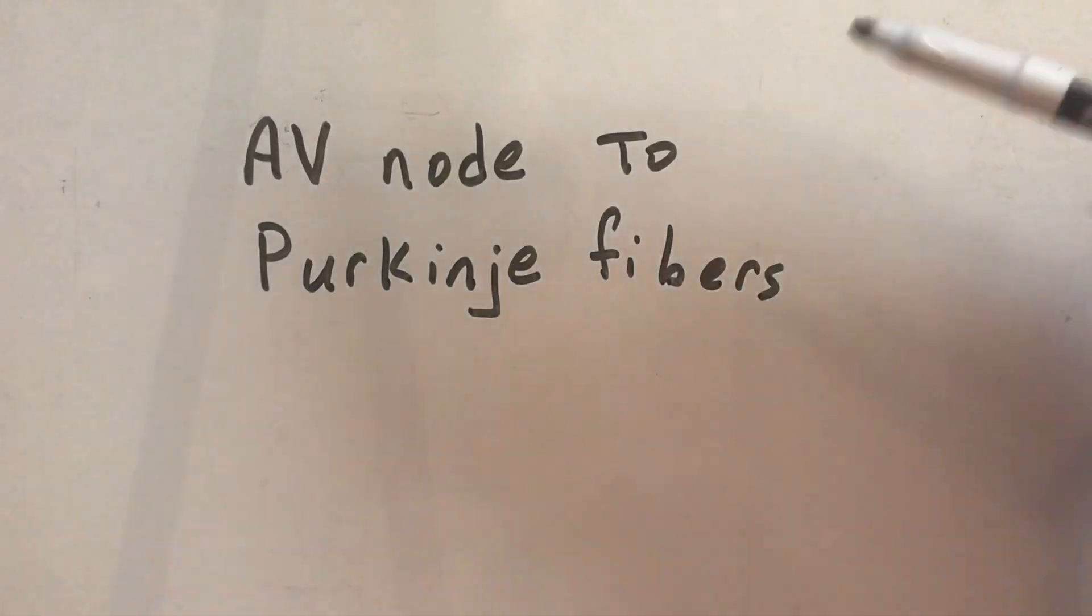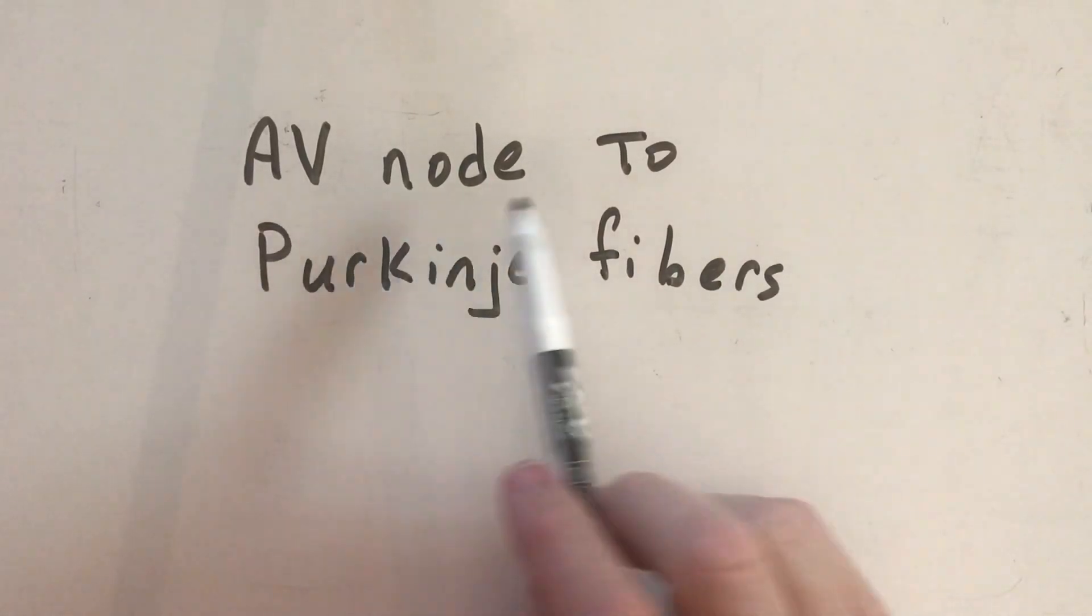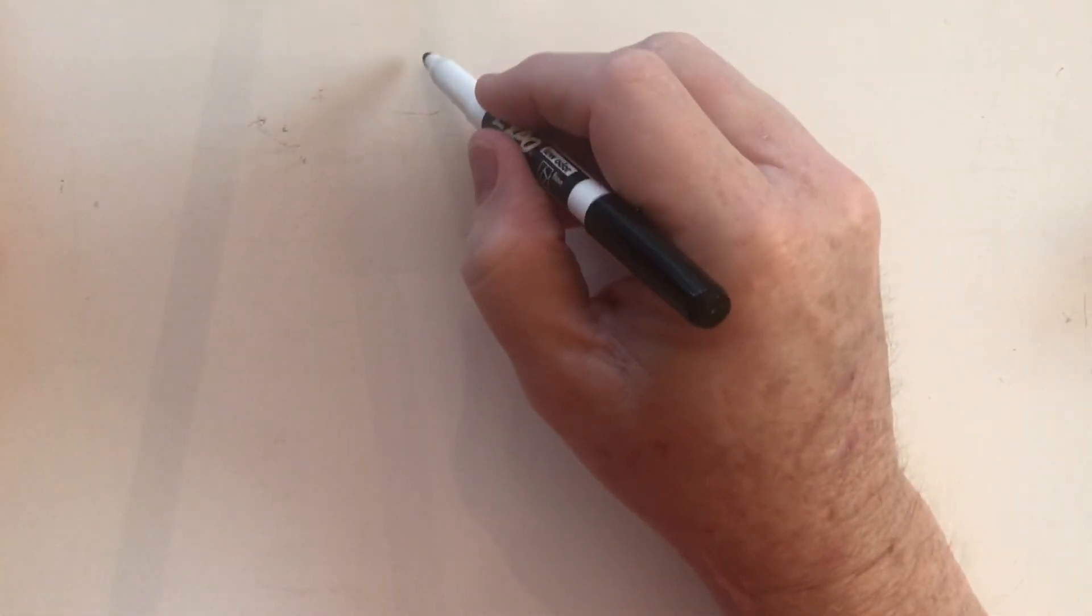Okay guys and girls, so what we're going to be talking about today is how an impulse travels from the AV node to the Purkinje fibers. If you recall last time, we talked about how we have our heart.